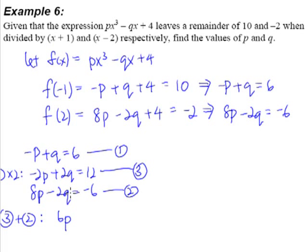The 2q terms will eliminate each other. So that will give us 12 - 6, which gives us 6. And therefore, we realize that p = 1.